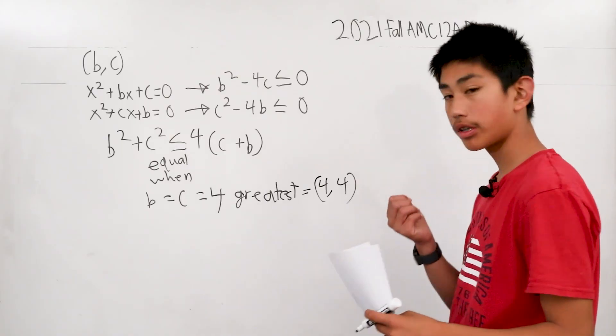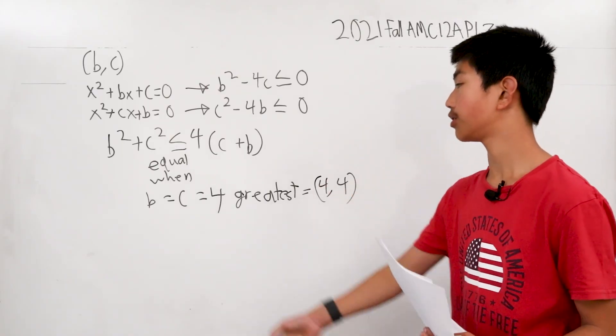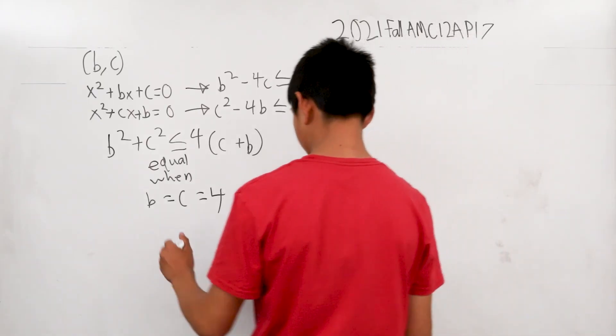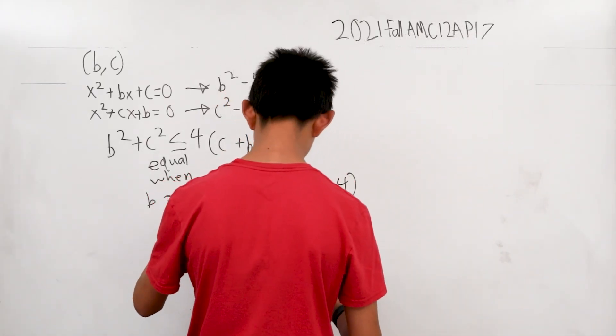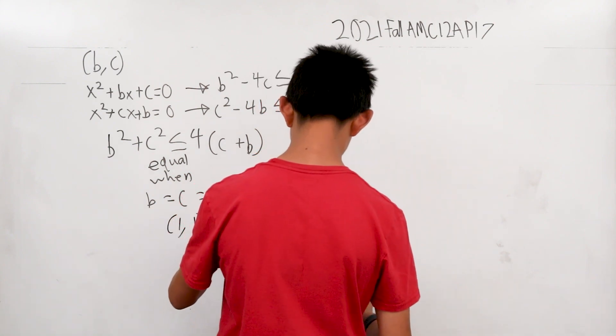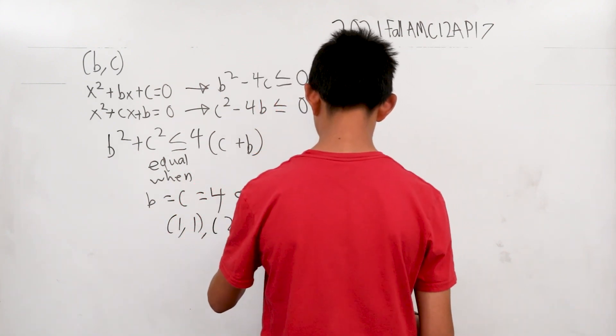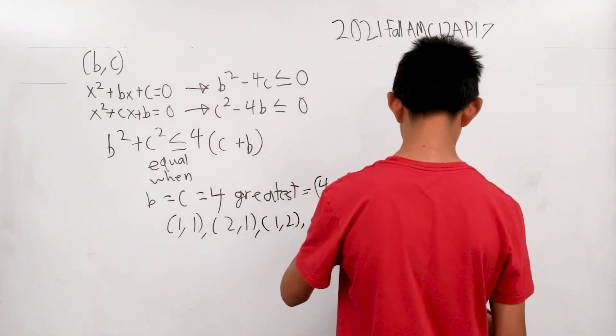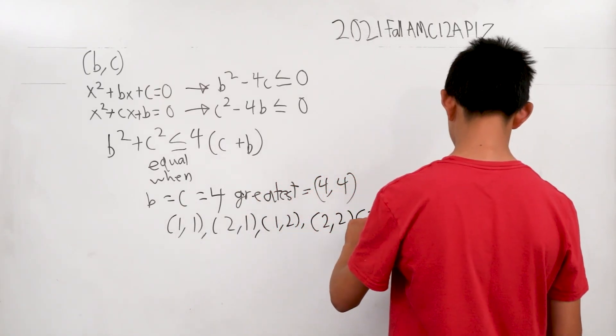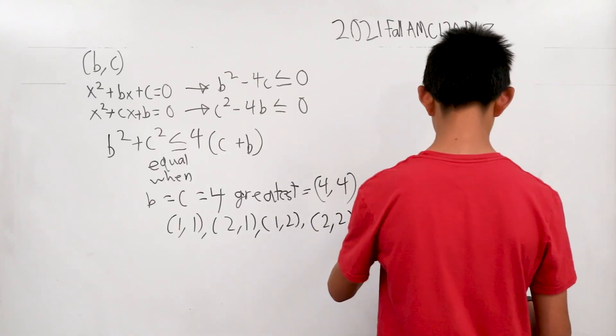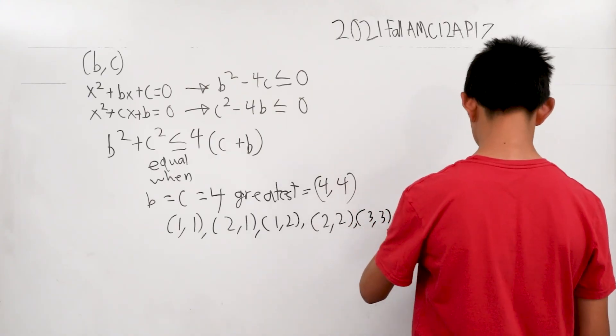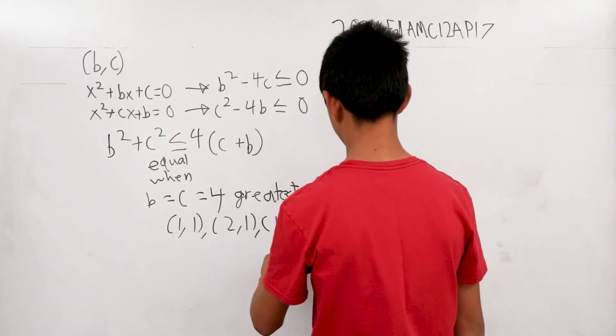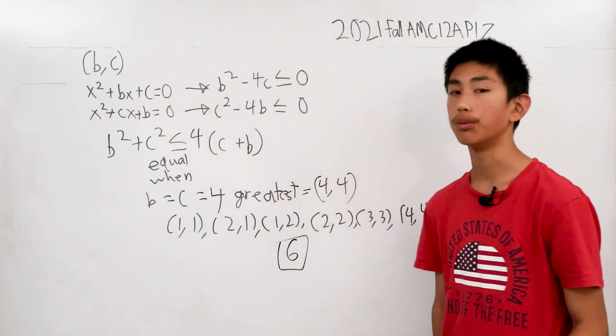You can just test these values to see which ones work. I'm going to list them out: (1,1), (2,1), (1,2) as you can switch these around, (2,2), (3,3), and lastly (4,4). When you count all these up, you get six solutions for this problem.